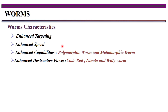Since TCP is connection-oriented and uses a three-way handshake, it takes more time to spread. Therefore, instead of TCP, worms use connectionless UDP to attack vulnerable machines, which significantly increases the speed of spreading.